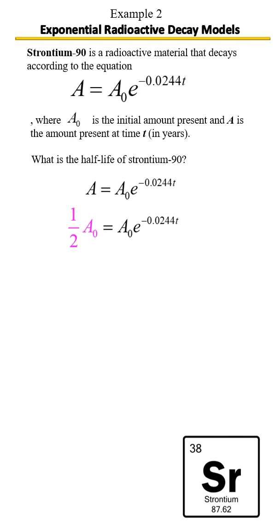Let's go ahead and solve. We want to solve for t. Remember, it's all about peeling away at those layers. First you want to get rid of a₀. After you do that, you then want to get rid of e. After that, get rid of -0.0244 to get to t.